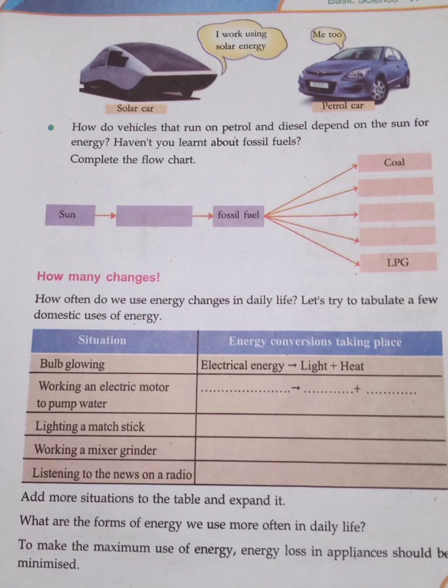Mixer grinder: electrical energy converted to mechanical energy plus sound energy plus heat energy. Radio: electrical energy converted into sound plus heat energy. Now explain what are the forms of energy we use more often in daily life.